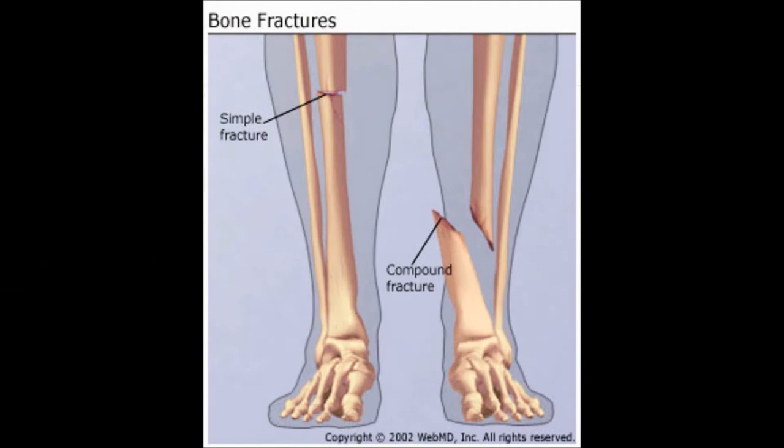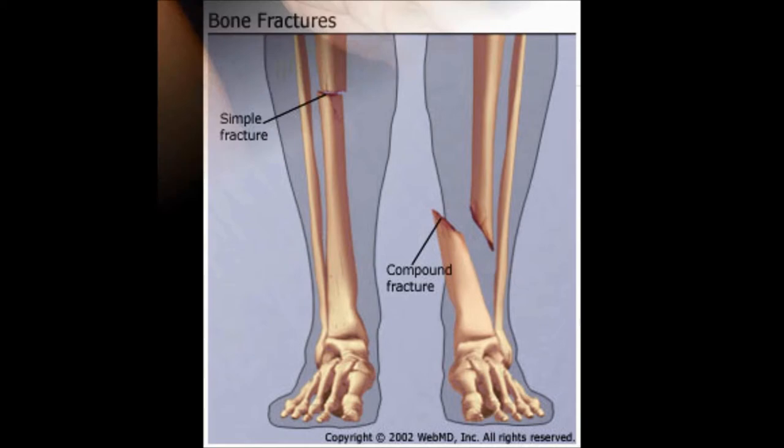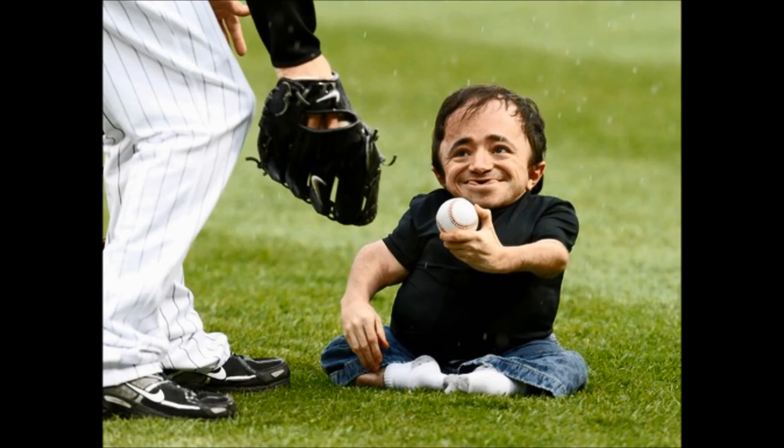Type 1 OI is the mildest form. This type causes many minor trauma-related fractures during childhood and fewer fractures during adulthood. Symptoms include loose joints and muscle weakness, a sclera that has a blue, purple, or gray tint, a triangular face, scoliosis, minimal bone deformity, brittle teeth, and hearing loss.